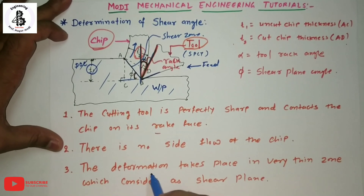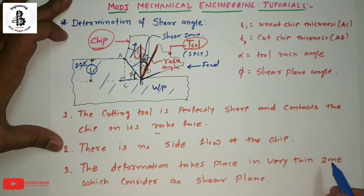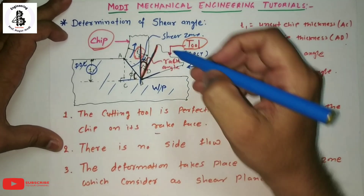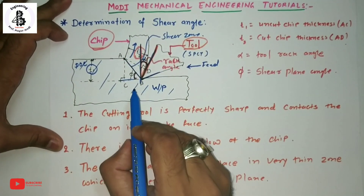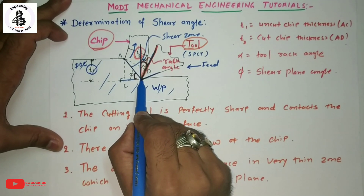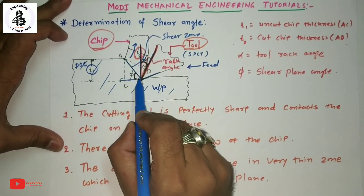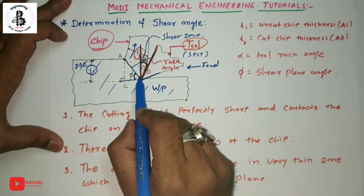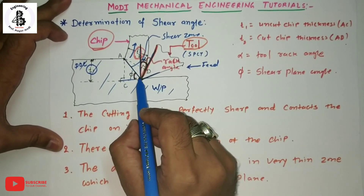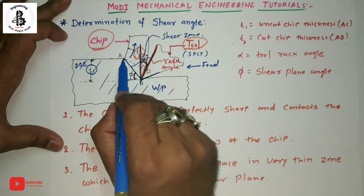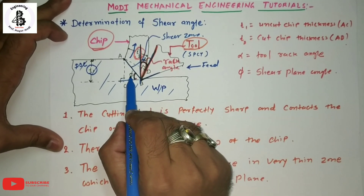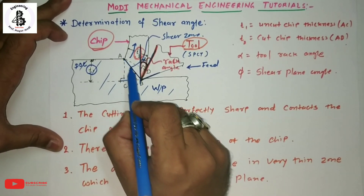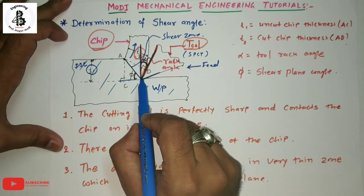Third assumption: deformation takes place in a very thin zone which is considered as the shear plane. The actual chips are formed from the cutting action taken place from the tip of the tool. The zone from A to B is this thin zone and acts as a shear plane, making the shear angle phi.